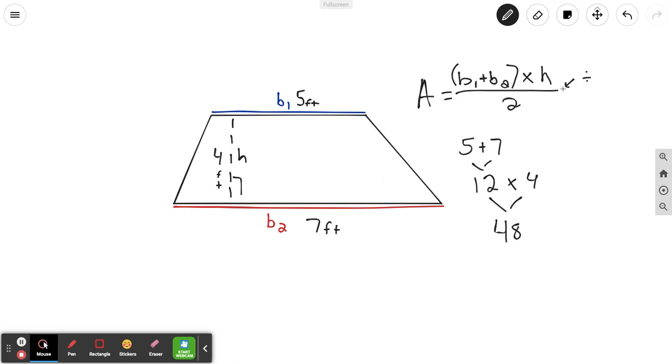And then the last part is, this bar means I'm taking my total, and I'm going to divide it by two. So I'm going to do 48 divide by two, and I'll get 24 feet. And then since my unit's in feet, it's going to be feet squared. That's finding the area of trapezoid.